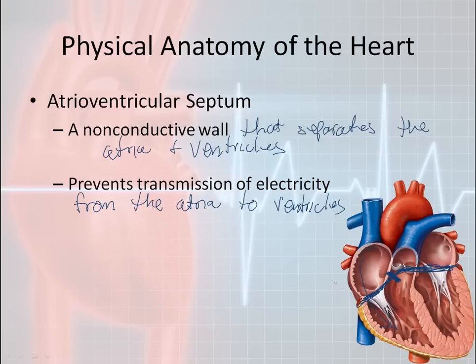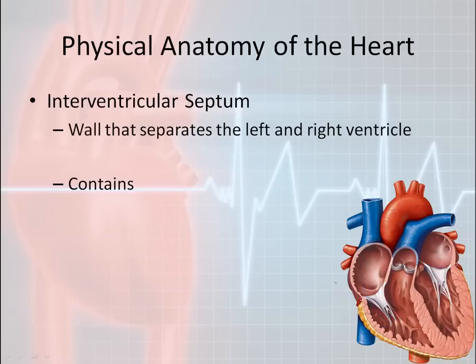In 12-lead ECG training, you will learn about pre-excitation syndromes, where extra conductive tissue bypasses the atrioventricular septum and can cause significant problems for patients. The interventricular septum, by contrast, is the wall that separates the two ventricles. It contains conductive pathways.